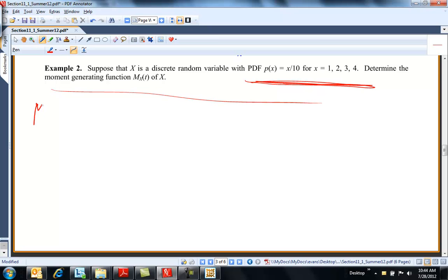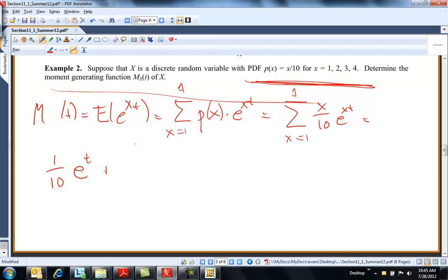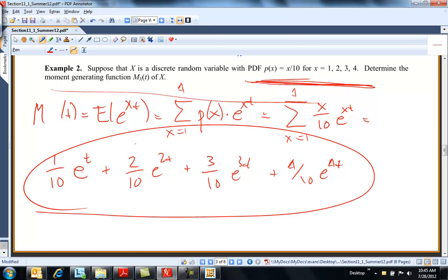Let's find its moment generating function. So I always write the definition here so I'll remember what it is. So if I have this, then I know exactly what to do because this is just law of unconscious statistician that says this is P of X times E to the XT over the support. X goes from 1 to 4. So this is just the sum of X over 10 E to the XT from X equal 1 to 4. So this is equal to 1 tenth E to the T plus 2 tenths E to the 2T plus 3 tenths E to the 3T plus 4 tenths E to the 4T. So this is the moment generating function of this discrete random variable.